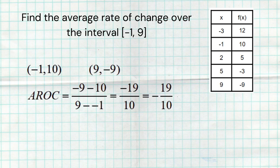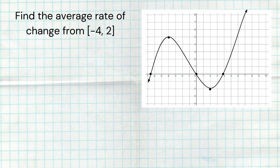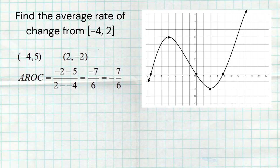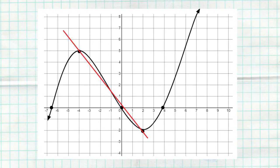We can also find the average rate of change from a graph. To find it from x = -4 to x = 2, look at the graph: at -4, the output is 5; at 2, the output is -2. The change in y is (-2 - 5) = -7 and the change in x is (2 - (-4)) = 6, giving us -7/6.